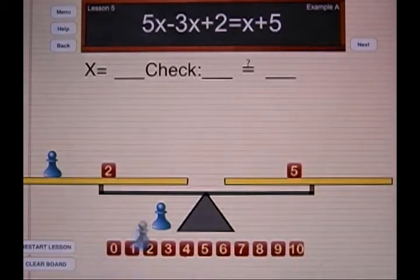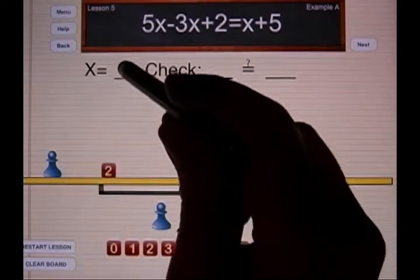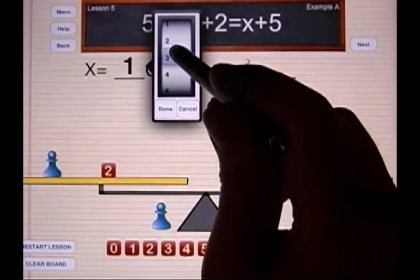I take away a blue pawn from each side. If this is a five and this is a two, the pawn is worth three. x is equal to three.